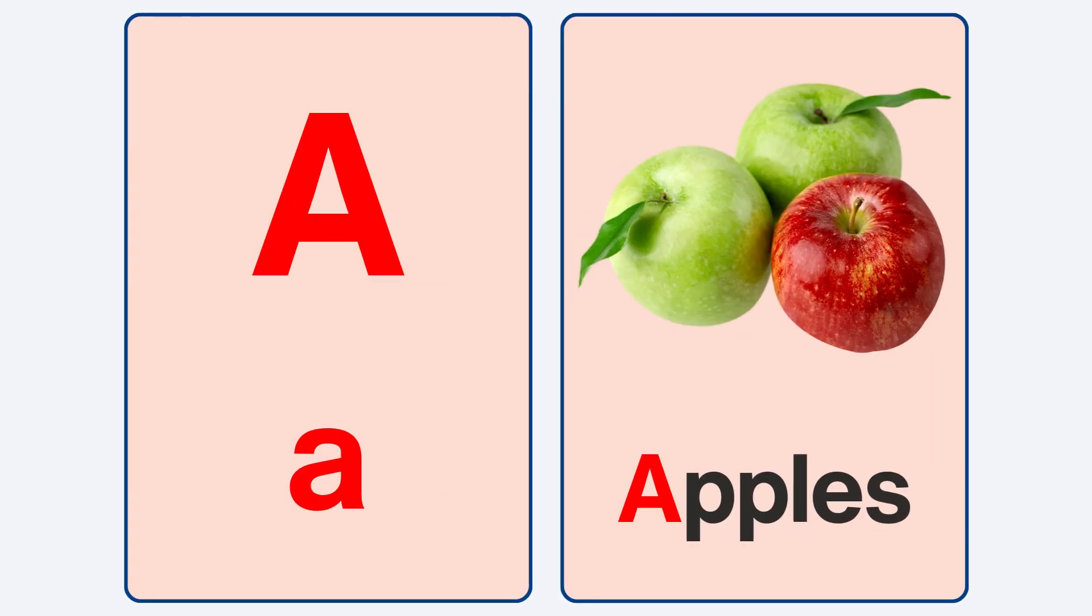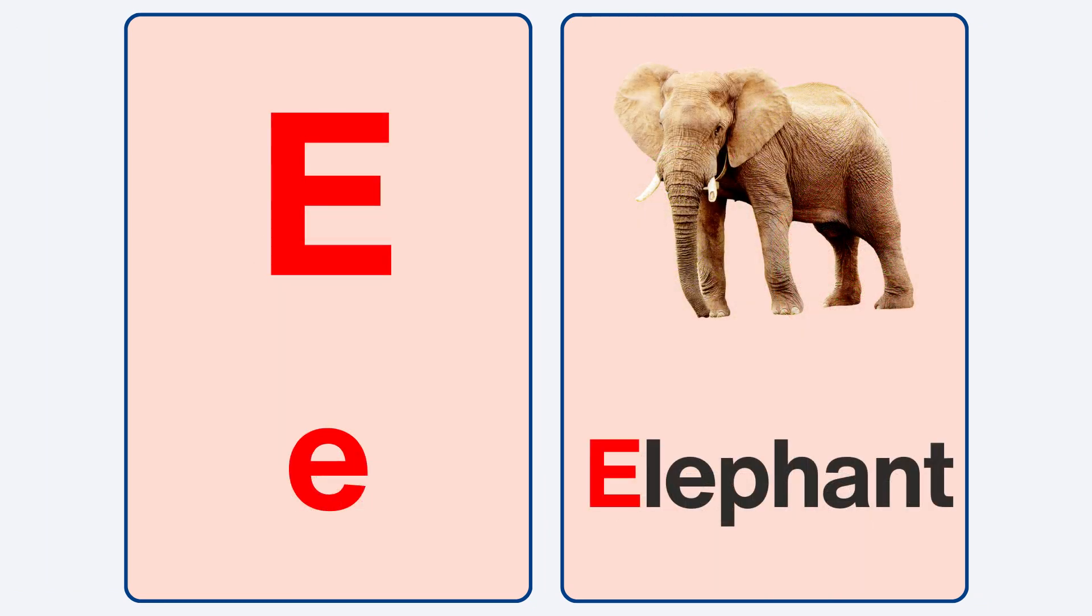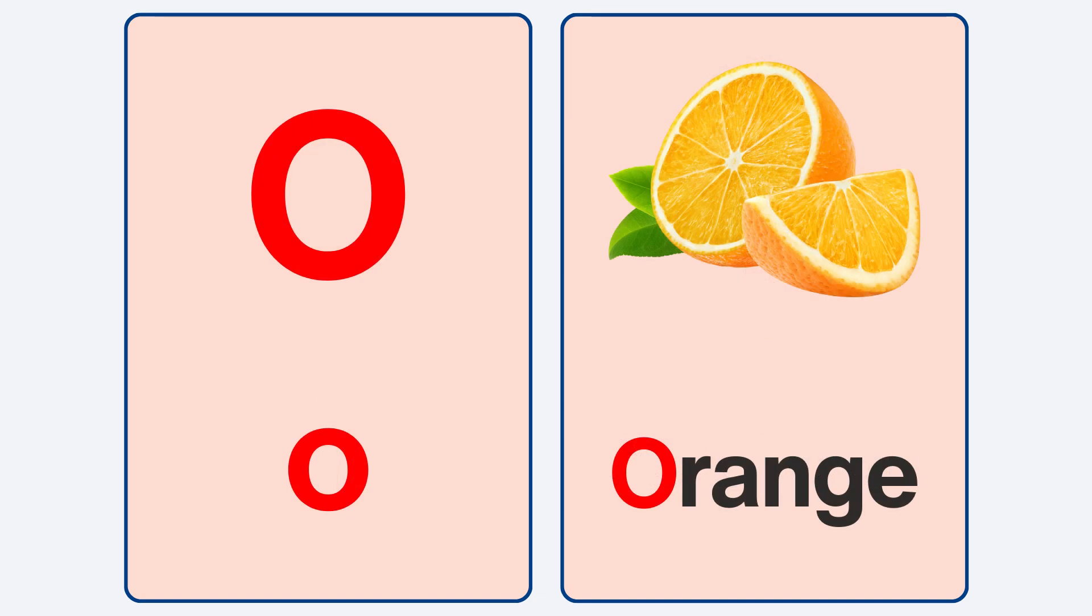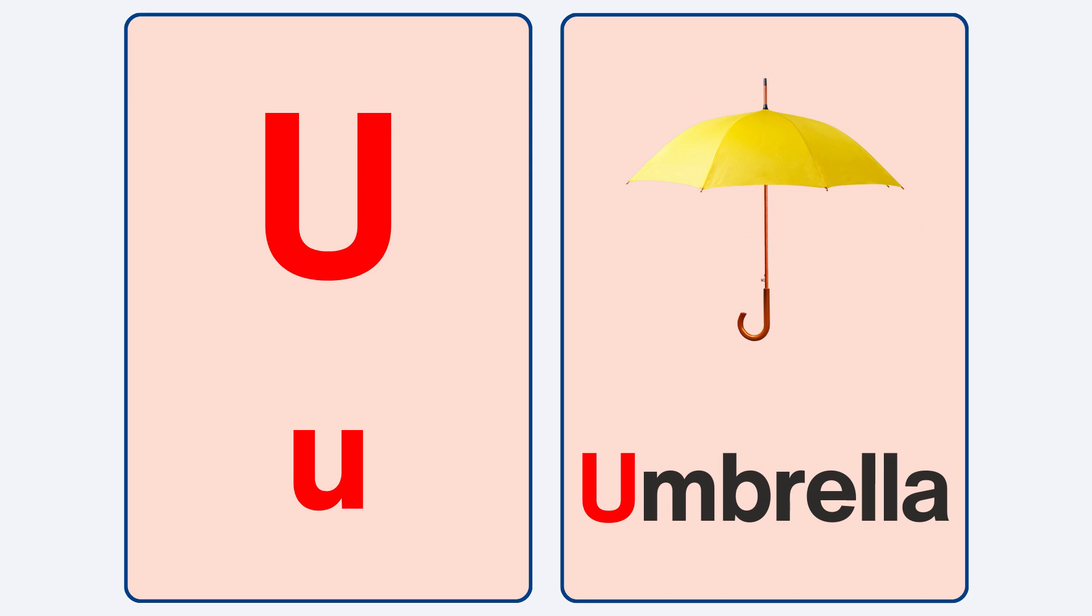The first letter is A. Let's learn the second letter, E. The third letter is I. The fourth letter is O. And the last vowel is U.